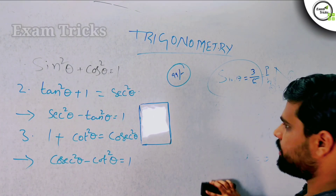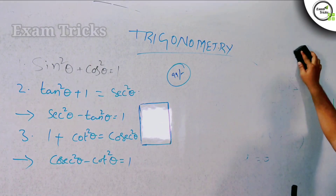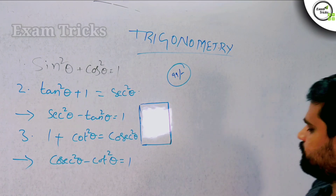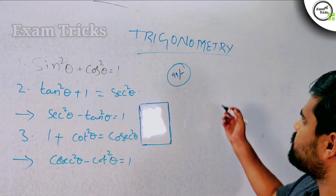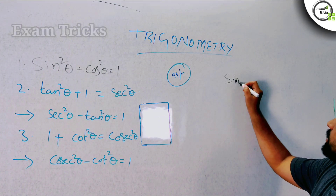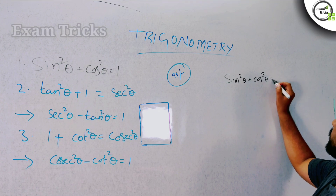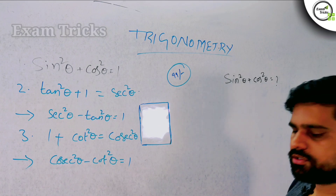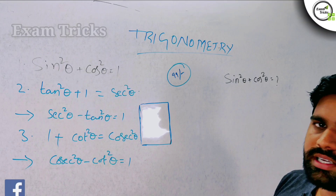First thing — you know that sin²θ plus cos²θ is equal to 1. We know that formula from 10th class. But in the exam, it's direct — two marks and one mark questions. sin²θ plus cos²θ is equal to some value n. These types of questions will be direct. So if you know what type of approaches are needed, it will be easy to solve.